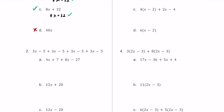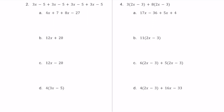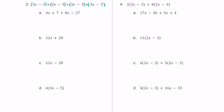Let's check out number 2. We have the expression of 3x minus 5 plus 3x minus 5 plus 3x minus 5 plus 3x minus 5. Keep in mind that we have this quantity of 3x minus 5 being added 4 times. So we could rewrite this expression as 4 of these 3x minus 5s, which would be an equivalent expression.